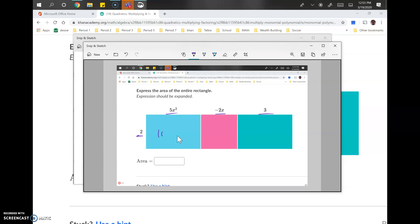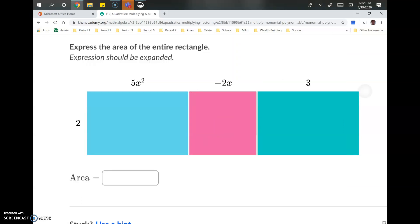So 5 times 2 is 10. Times X squared is X squared. 2 times negative 2 is negative 4 times X. And the last one, 2 times 3, is 6. This is a positive 6. Negative 4, positive 10X squared. Cool? And we'll just go ahead and punch that in.